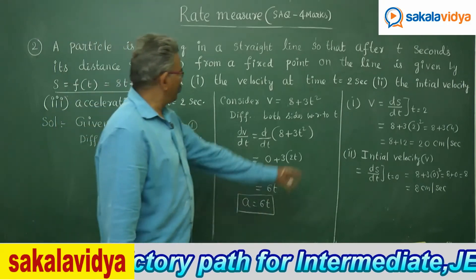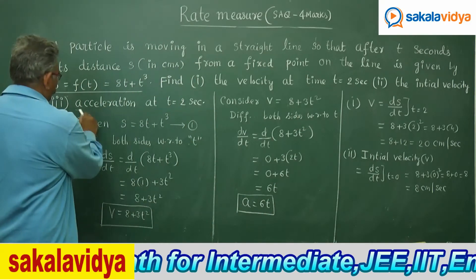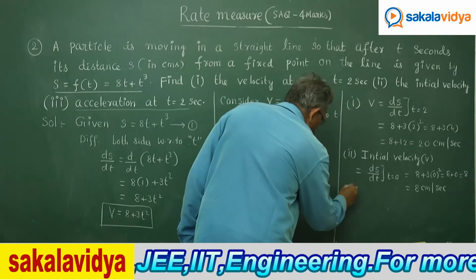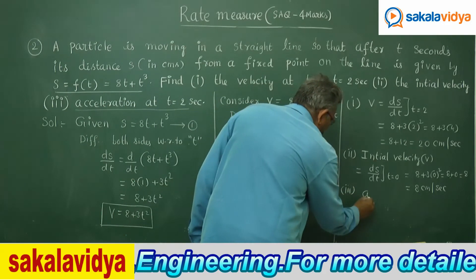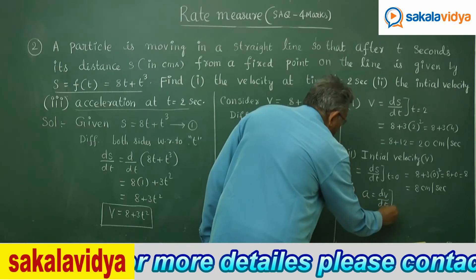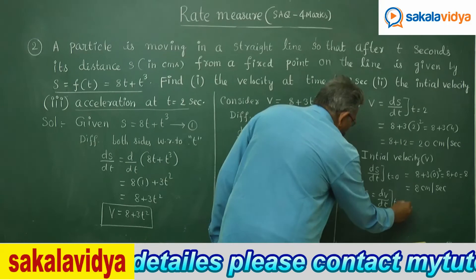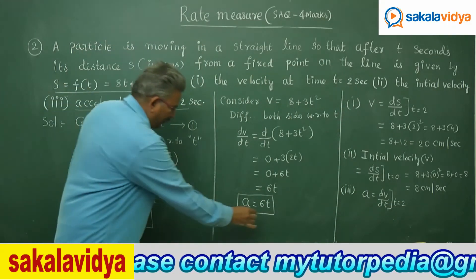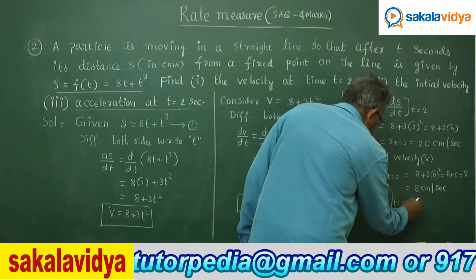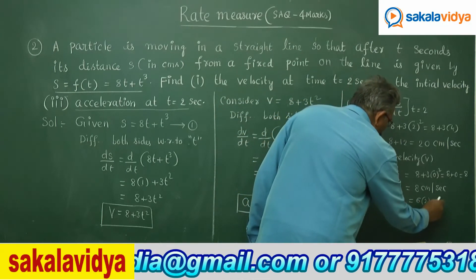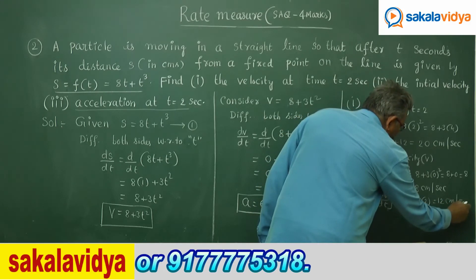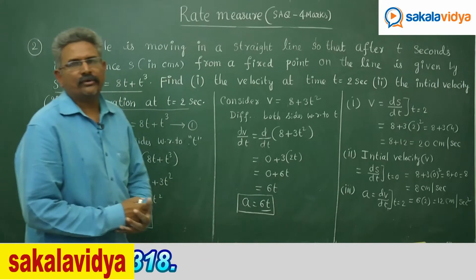Now we need to find the acceleration. Acceleration equals dv by dt at t equal to 2. dv by dt is 6t, so 6 into 2 equals 12 centimeters per second squared. So in this way, we can solve the problem.